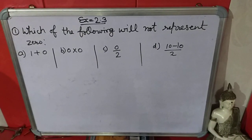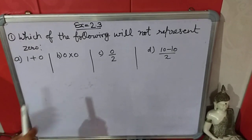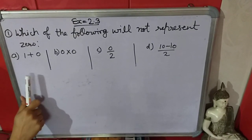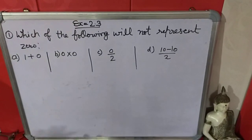Now we will move on to exercise 2.3, first question of this exercise. Which of the following will not represent zero? You have to tell me which part's answer will not be zero.